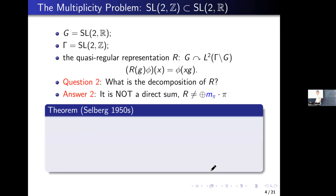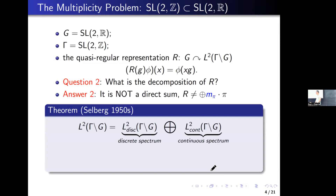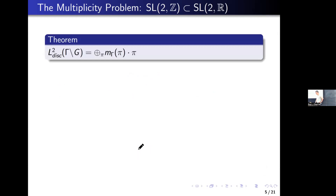This result was first proved by Selberg in the 1950s. He proved that the L2 functions on the quotient space are made up of two parts: the first is the discrete spectrum, and the second is the continuous spectrum. Only for the first discrete spectrum can it be written as a direct sum. For the continuous spectrum, it is no longer a direct sum but a direct integral. In this decomposition we still have M_pi, which is the multiplicity. So the question is: can we get any information about this multiplicity?